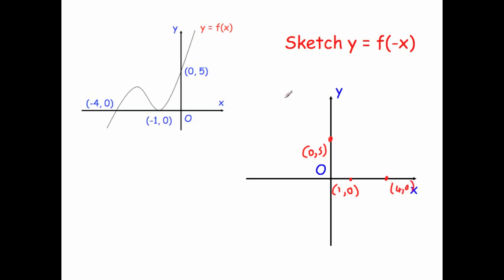Now drawing the reflected curve: it comes down, touches at (1, 0), curves back up, and comes down through (4, 0). As you can see, it's a reflection in the y-axis that flips the curve over.